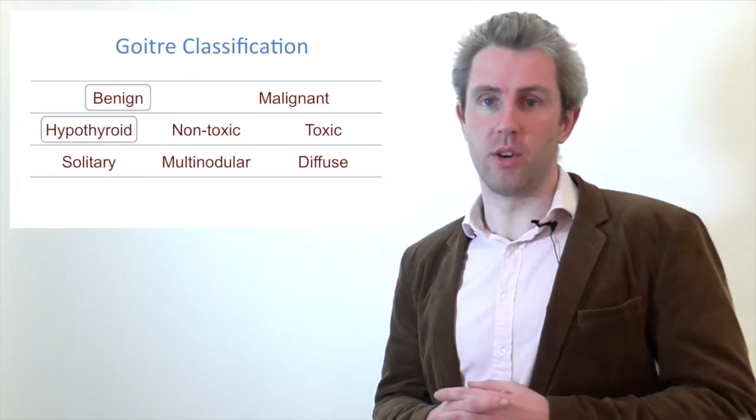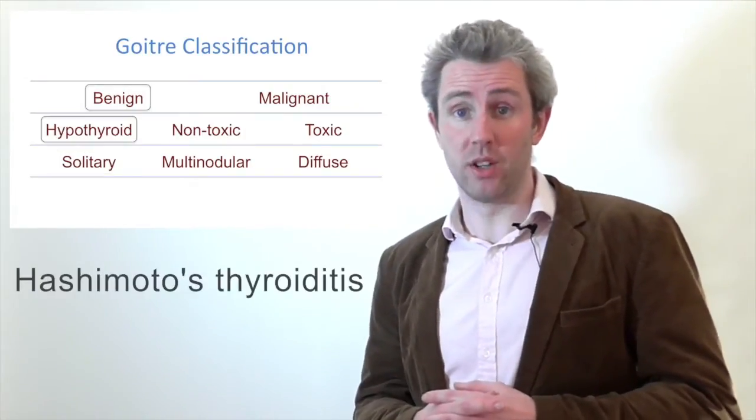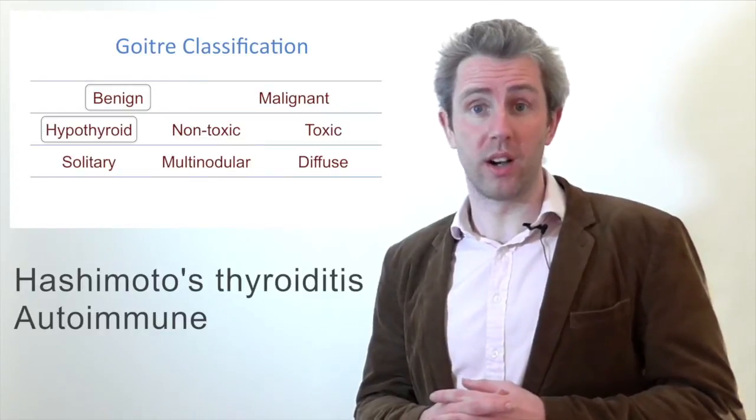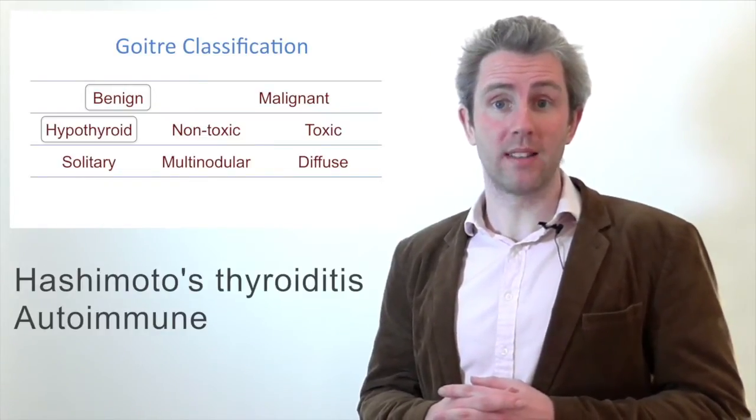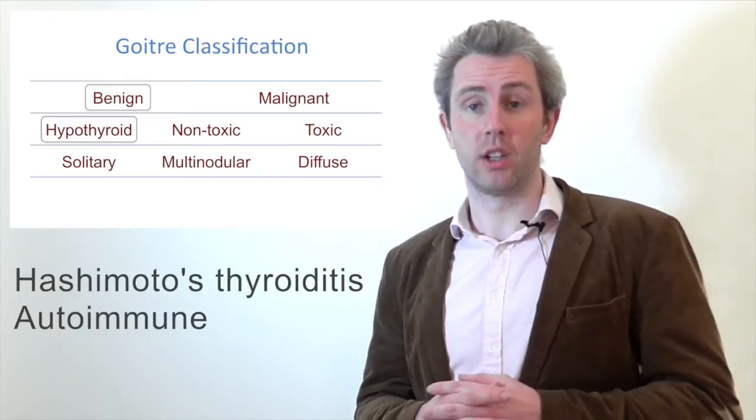Benign hypothyroid goiters include Hashimoto's disease, which is an autoimmune thyroiditis, where auto-antibodies against the thyroid gland cause fibrosis.